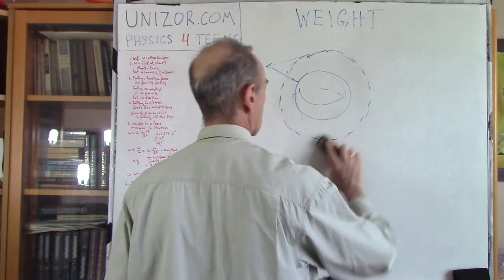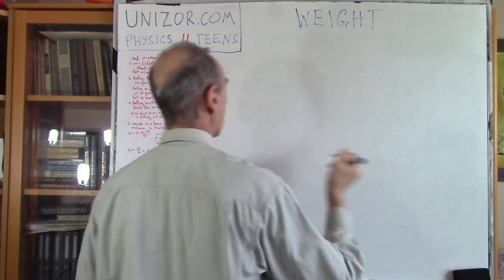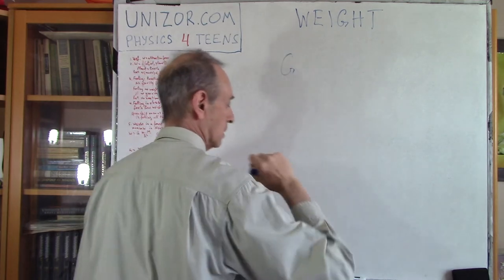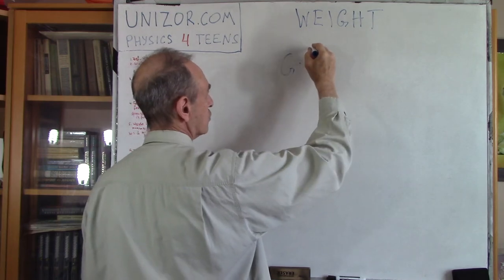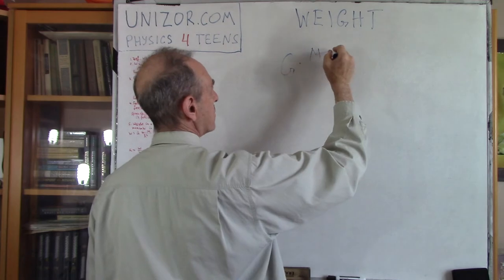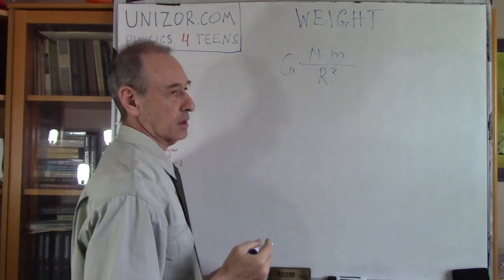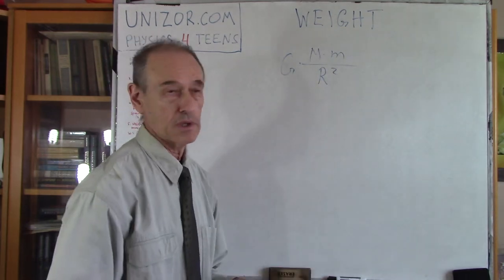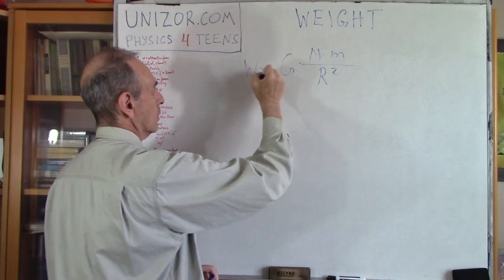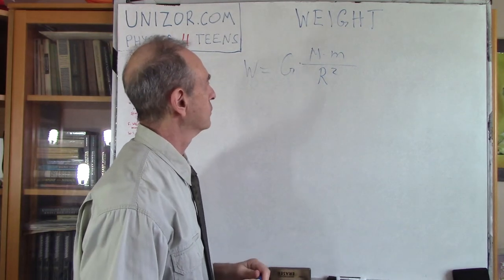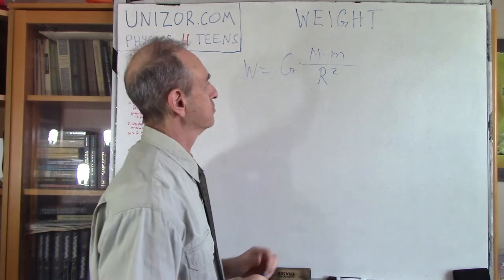Now let's go back to some more mathematical aspects. Let me remind you again the law of universal gravity. There is a gravitational constant, and we know that the force of gravity is proportional to the mass of the planet, times the mass of the object. The weight of an object of mass M is the force with which the planet of mass M attracts that object.